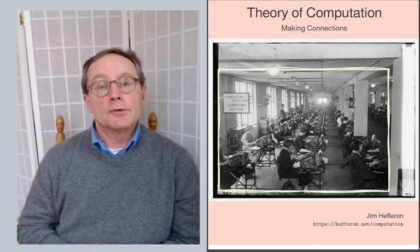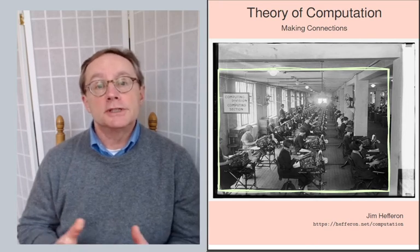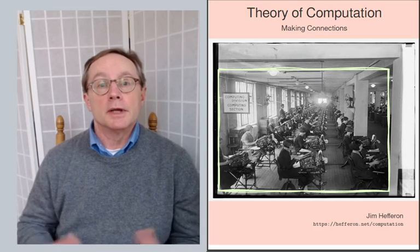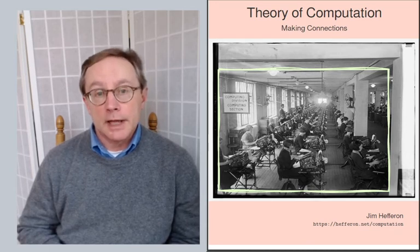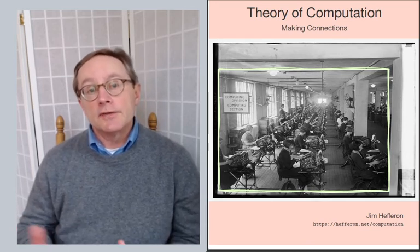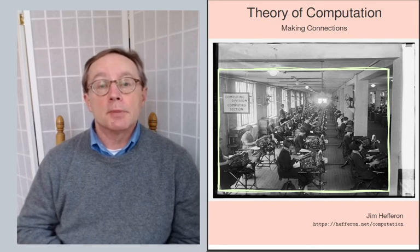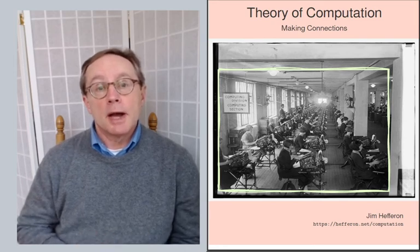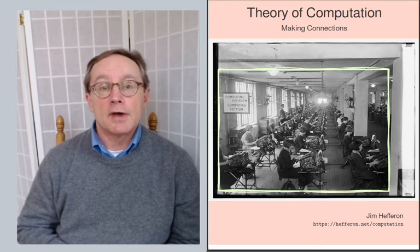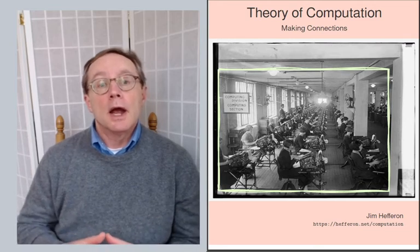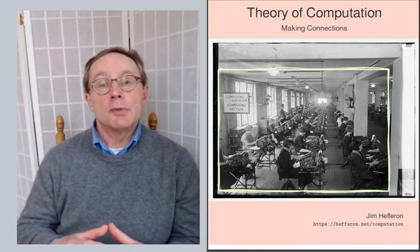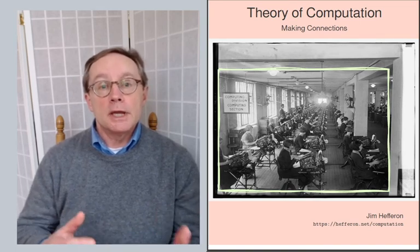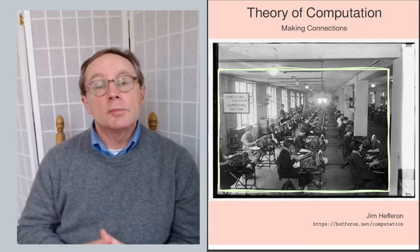The fourth chapter studies finite state machines — machines in which memory is bounded. You sometimes see these called finite state automata, and we'll also cover regular expressions and regular languages. Then finally in the fifth chapter, the last chapter, we study complexity. We start by talking about big O, which is familiar to anyone who has done any programming, and then finish the chapter by covering reductions between problems, P and NP, and the question of whether P equals NP.